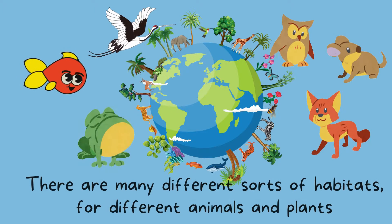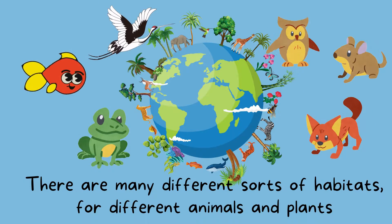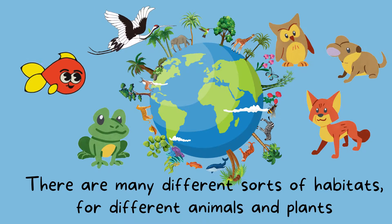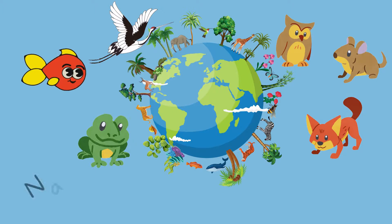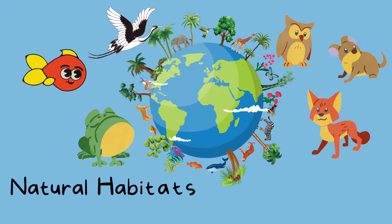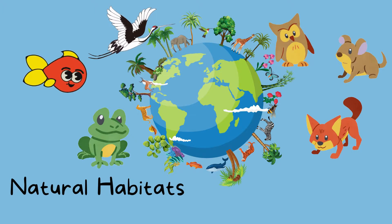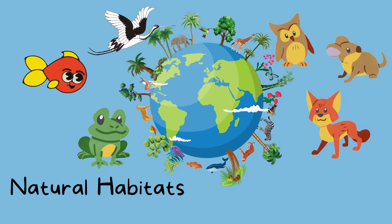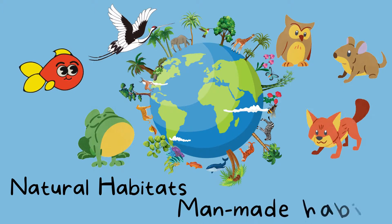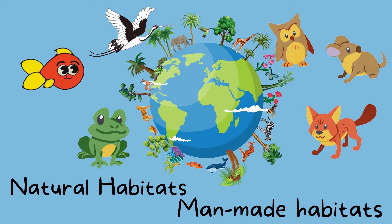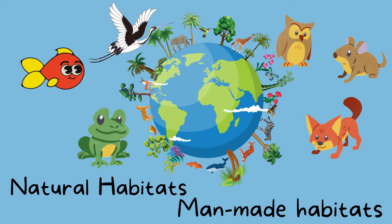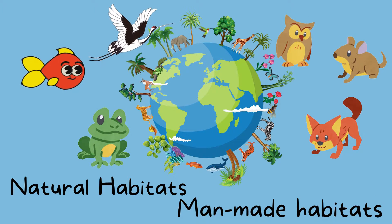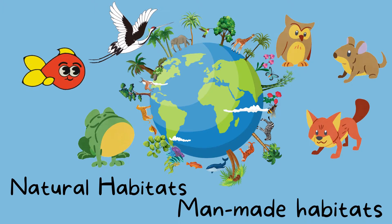There are many different habitats for different animals and plants. Some of these habitats are natural habitats, and some of them are man-made habitats. Man-made habitats are built by humans for animals or plants to live.